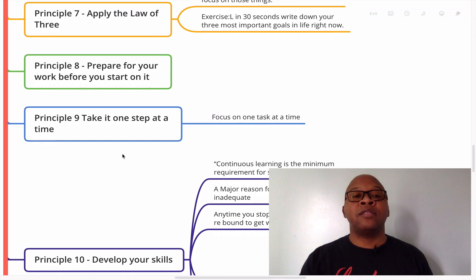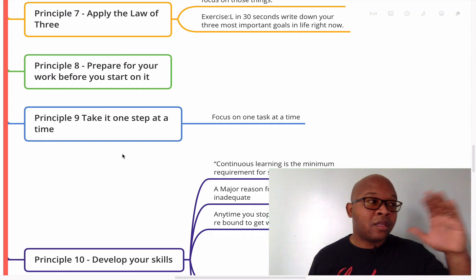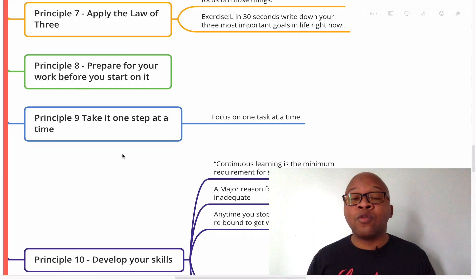Principle number nine is take it one step at a time. Yes, take it one step at a time, not three steps, not 10 steps, but one step at a time. So focus on one task at a time. In fact, our brain can only focus on one thing at a time. If you have multiple tasks that you're working on at the same time, what your brain is doing is constantly bouncing from one task to the next and back and forth, and you're burning more energy, and you're not going to perform at your best, at your optimal level. So the best thing to do is to focus on one task at a time.